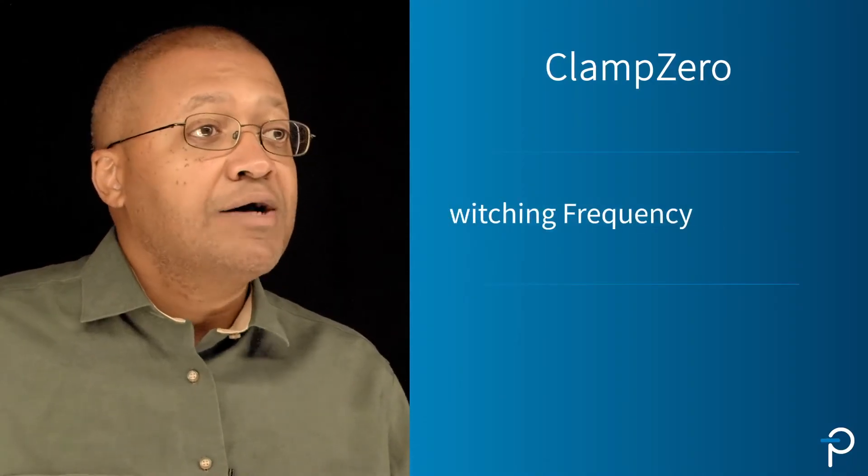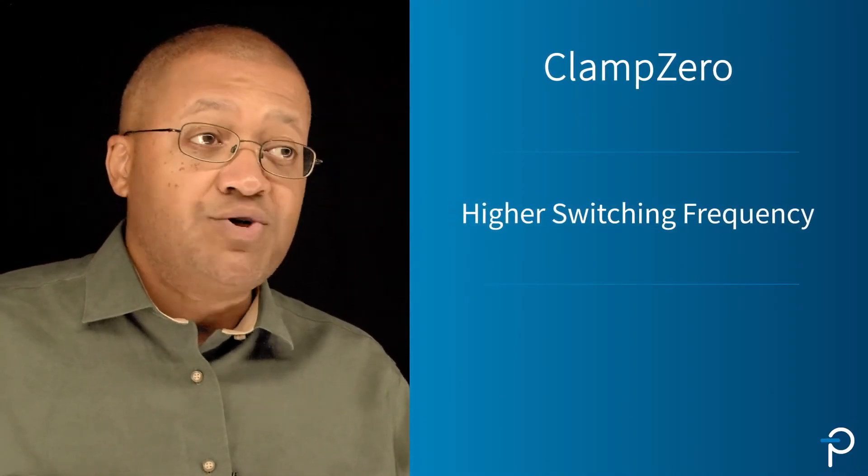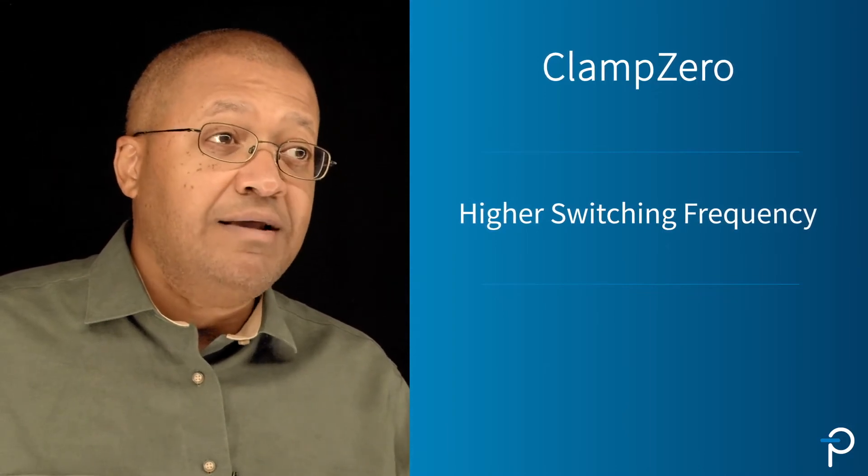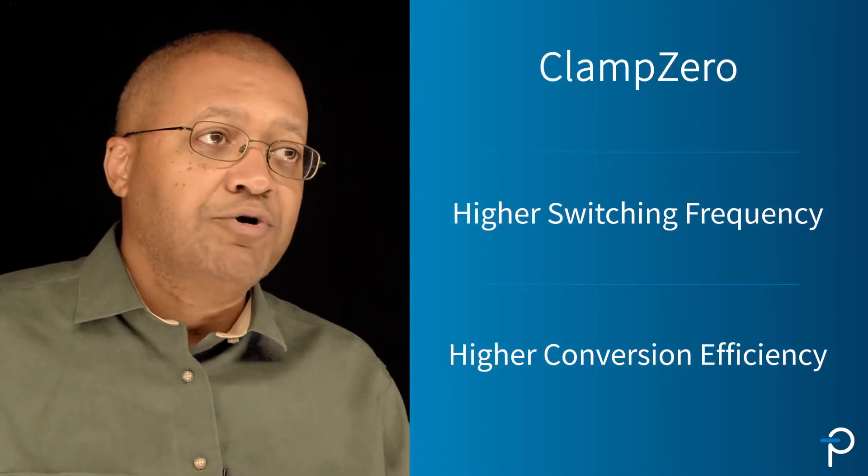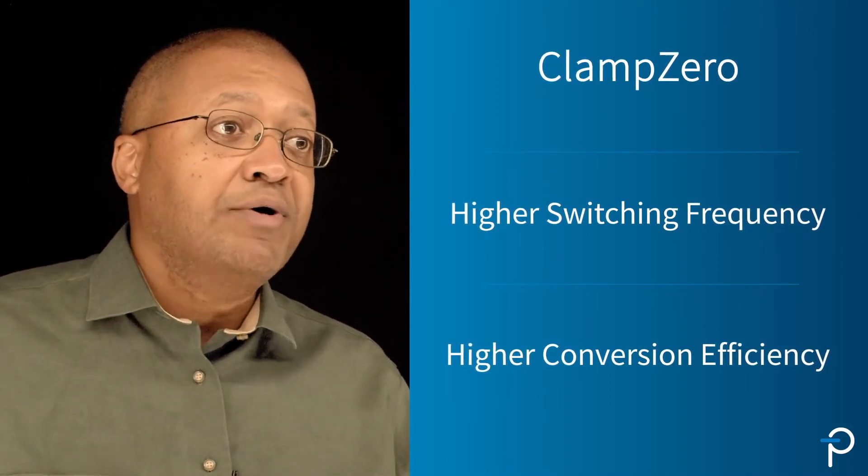An active clamp solution allows you to operate at higher switching frequency because it eliminates all the switching losses inside the Power GaN in the InnoSwitch 4. It recirculates all leakage energy to allow for higher conversion efficiency for a high power density solution.